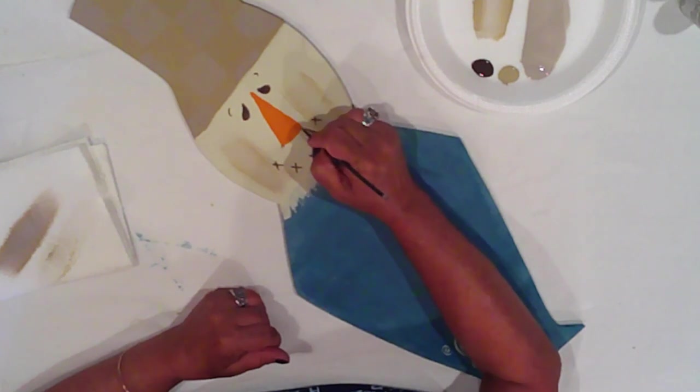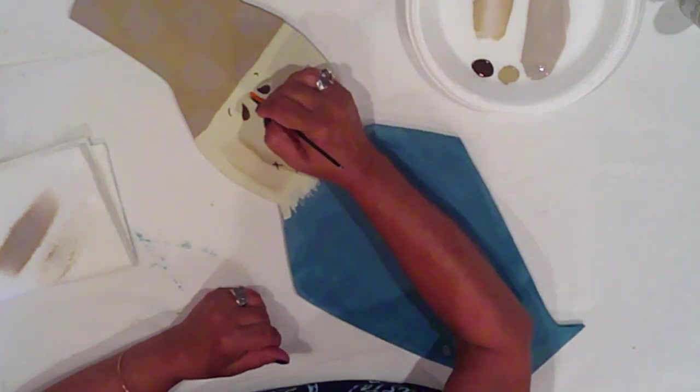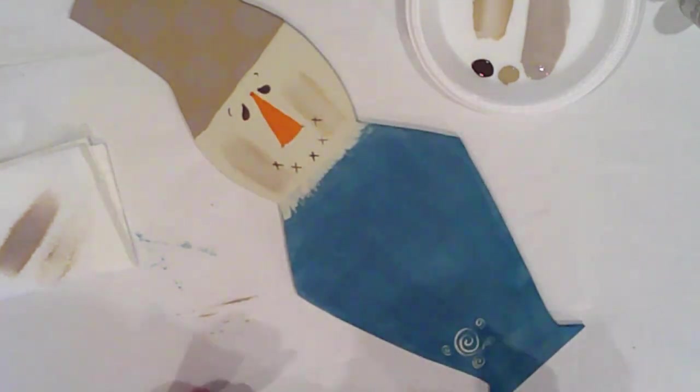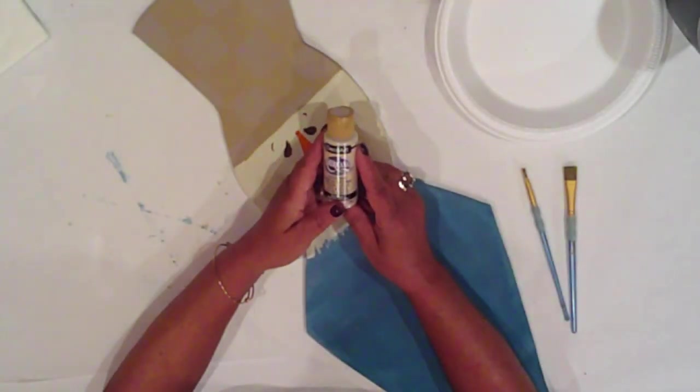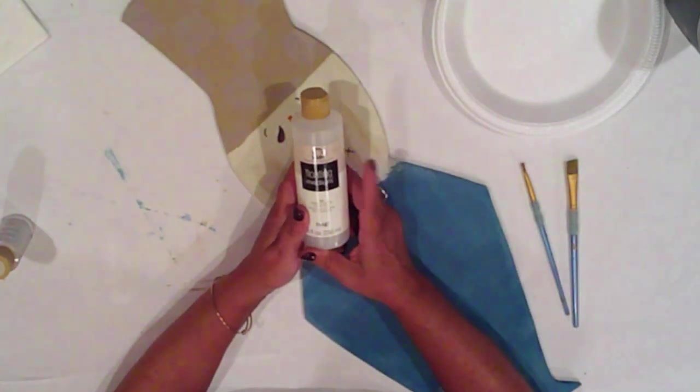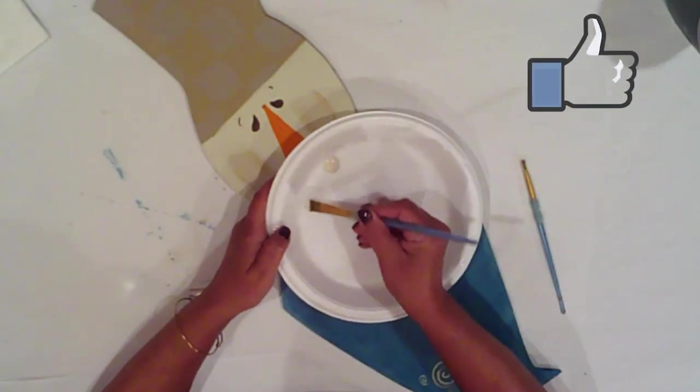Then some stitch lines along his nose. I'm using Americana Oyster Beige and Float Medium to shade his face. I dip my brush into the floating medium, working it into my bristles.